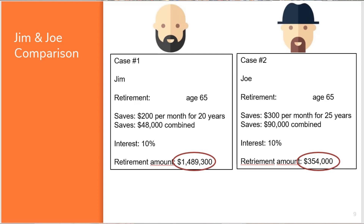And what if they were lucky or skilled enough to make 10%? That would give Jim $1,489,000 — almost one and a half million dollars at age 65 — whereas Joe ended up with $354,000, having deposited nearly double the amount. This is the power of starting early, and I wish I had known this when I was 10 or 15 or 20. I'm now teaching my kids — who are 11 and 12 — to start early and we're starting investing classes together.